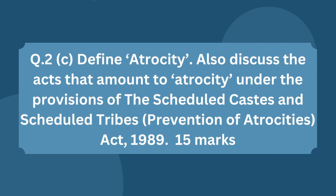This question asks you to define atrocity and discuss the acts that amount to atrocity under the Scheduled Castes and Scheduled Tribes (Prevention of Atrocities) Act of 1989. Start with the concept of untouchability under Article 17 of the Constitution of India as an introduction, then link the Act with this article. Come to the definition of atrocity given under Section 2A of the Act, and list out and explain the acts falling under the ambit of atrocity, like violence, bonded labor, etc.